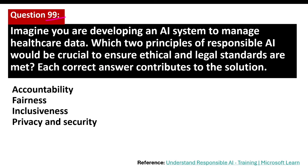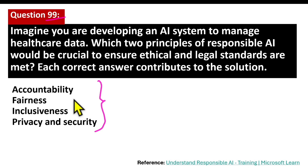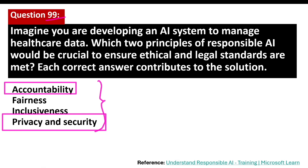Question number 99. Imagine you are developing an AI system to manage healthcare data. Which two principles of responsible AI would be crucial to ensure ethical and legal standards are met? Note that you will likely encounter three or four questions related to responsible AI in your exam, so don't take it lightly. The correct answers are accountability and privacy and security.